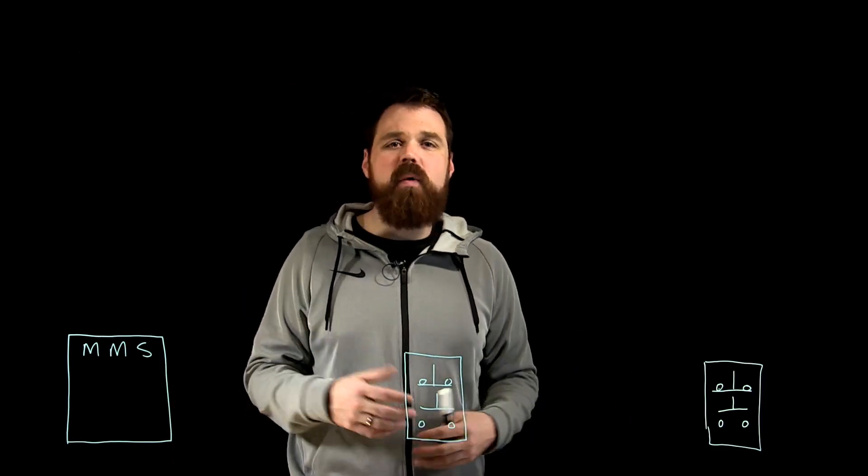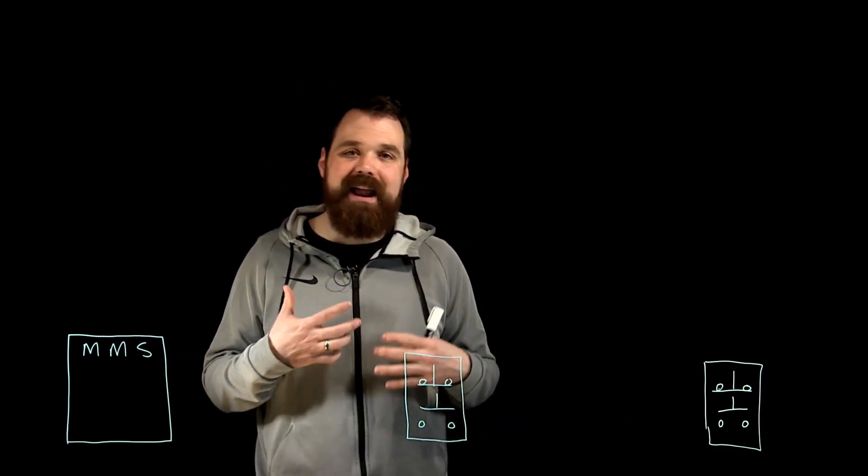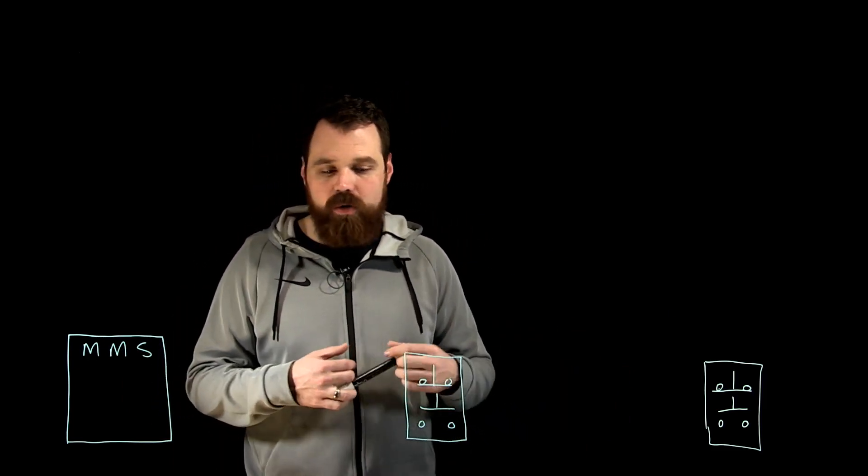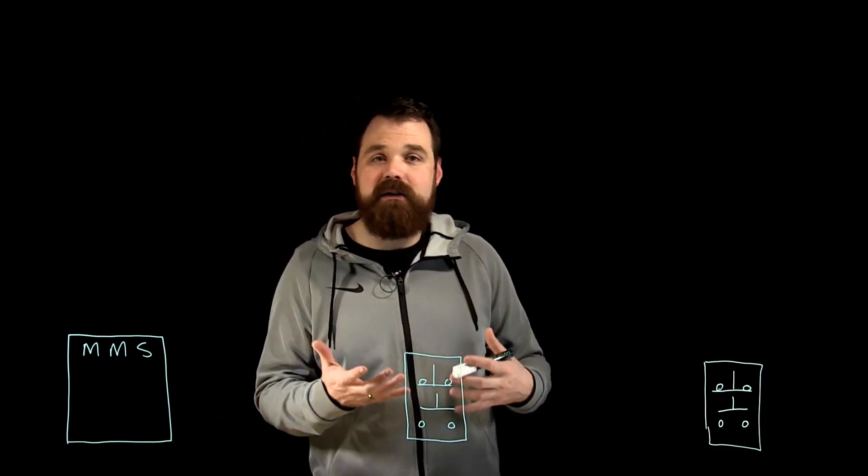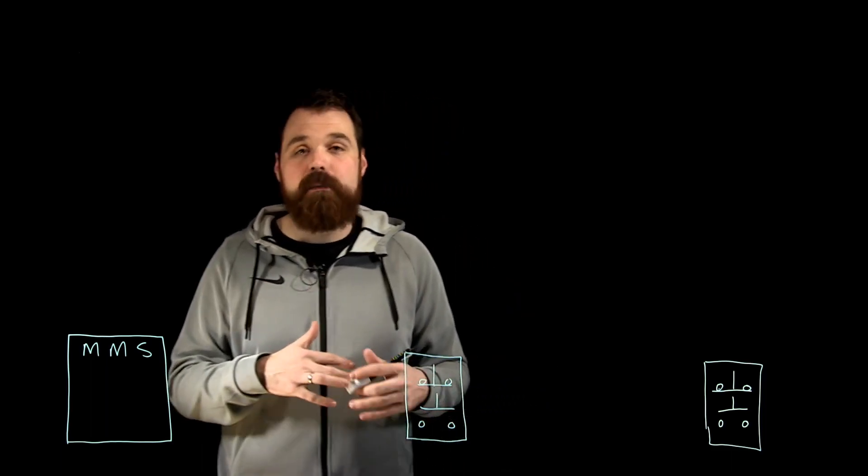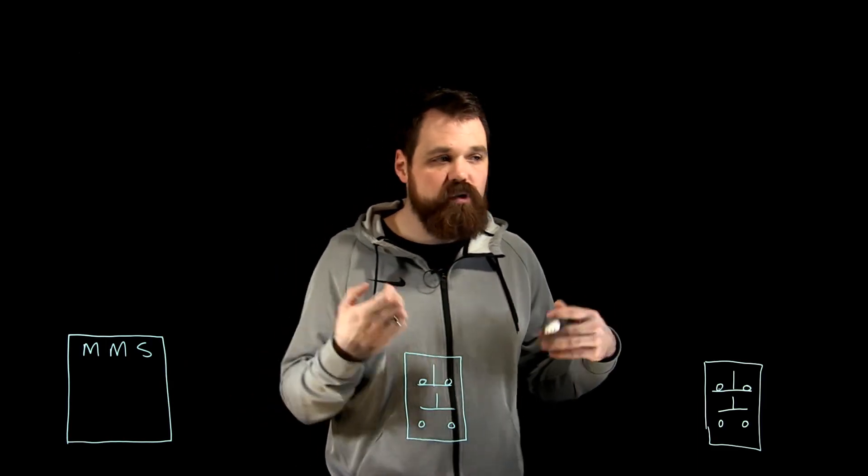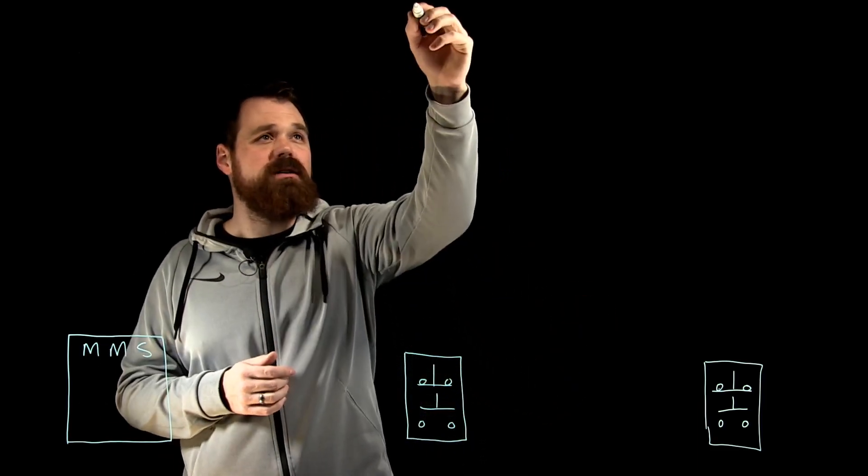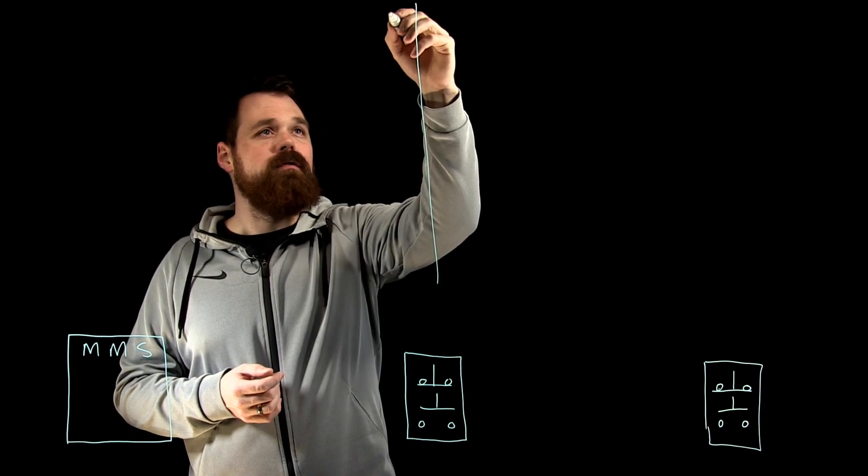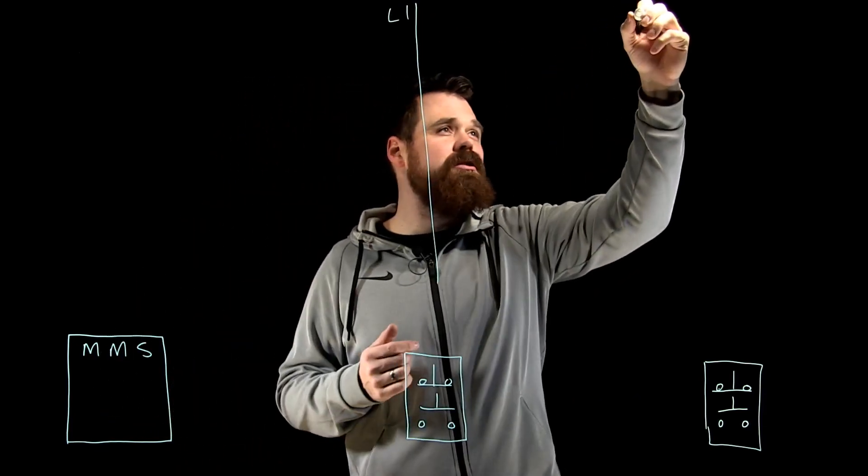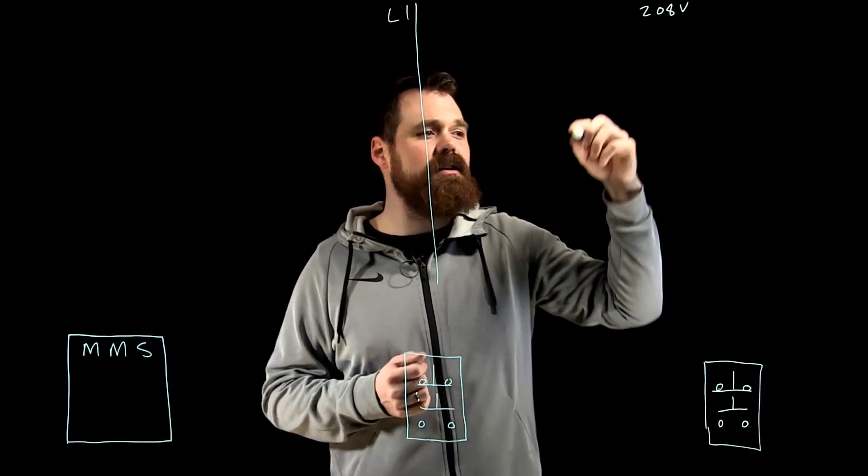So before we talk about wiring that up, let's talk about how the schematic for that would look. We know that a stop button is the button that I want to use to interrupt the current to turn off my motor. So if I'm drawing a schematic diagram for this situation, I'll have line one probably, let's just call this 208 volts just for simplicity.